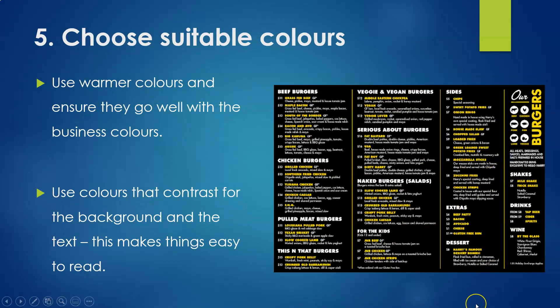Tip number five is to choose suitable colors. For restaurants and food-related businesses, warmer colors are generally the best choice because they invoke hunger in people and remind them of food. Cooler colors like blues and greens can remind people of mold and moldy food, so we definitely don't want that. Also, use contrasting colors between the text and the background — like a black background with yellow and white text — to make it easy for customers to read.